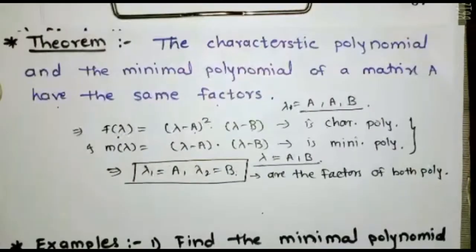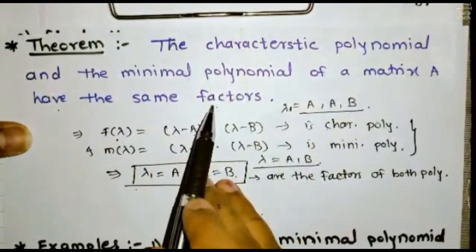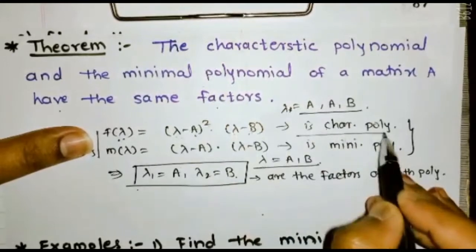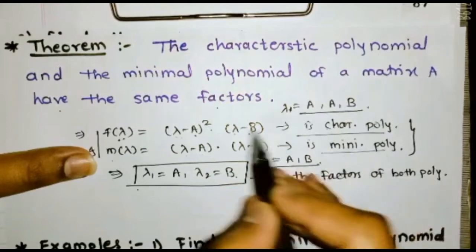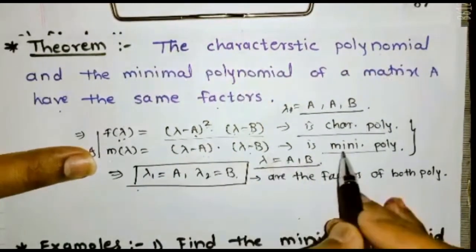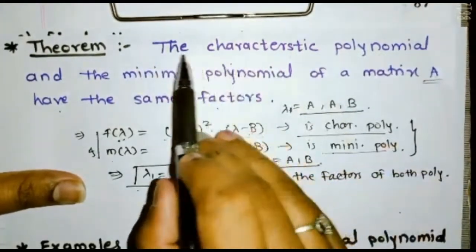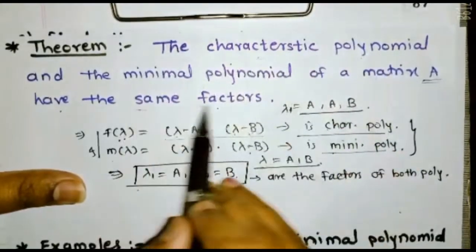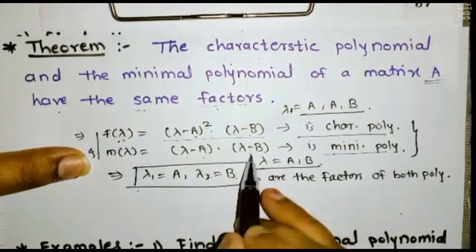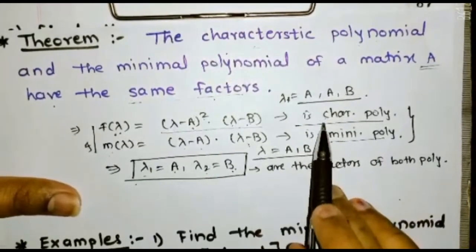This is the definition of minimal polynomial. Next is the theorem: the characteristic polynomial and the minimal polynomial of matrix A have the same factors. For example, if f(λ) = (λ − a)²(λ − b) is the characteristic polynomial, and m(λ) = (λ − a)(λ − b) is the minimal polynomial, both polynomials have the same factors: λ₁ = a and λ₂ = b. The only difference between the characteristic polynomial and the minimal polynomial is the multiplicity — that is, the power or degree — but the factors must be the same.